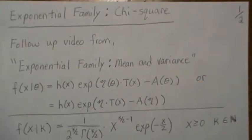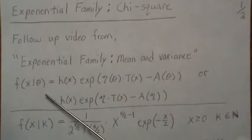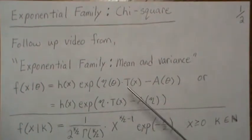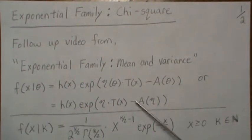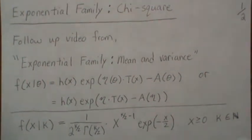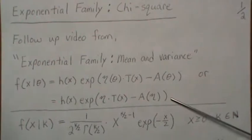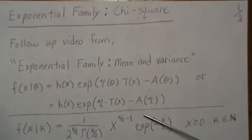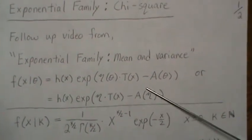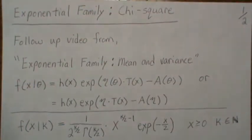There we showed that if you could write the distribution — the density, the probability mass function — in this form, then finding the mean and the variance is much easier. Specifically, if you write it in canonical form, then the moments are the derivatives of the log partition, the A of eta.